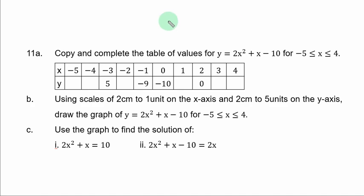Question 11A. Copy and complete the table of values for y equal to 2s squared plus s minus 10 for minus 5 less than or equal to s less than or equal to 4. You have the table of values with some missing values for y and you are expected to get them.